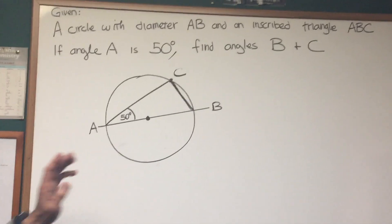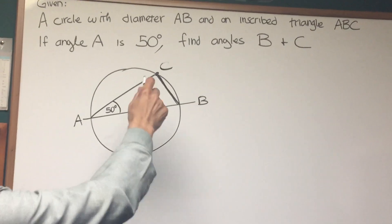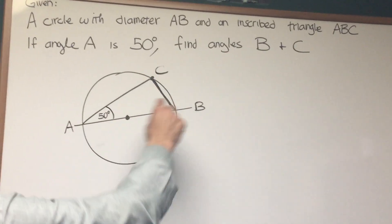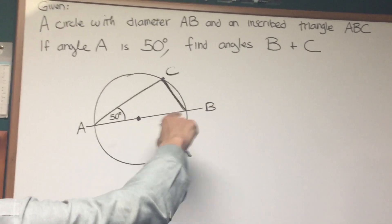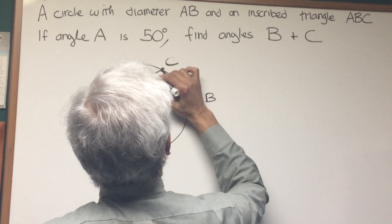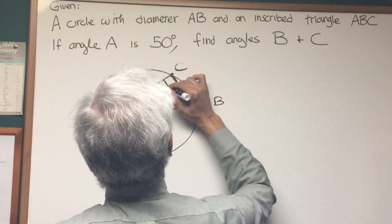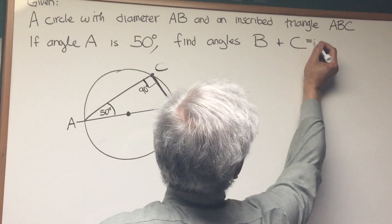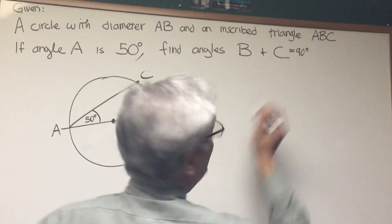Okay, well, right off the bat, I know that if I have a point on a circle and it subtends an angle whose endpoints are the diameter of a circle, that angle is 90 degrees. So right away I know that angle C is equal to 90 degrees.